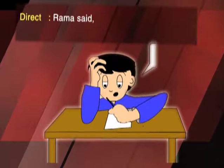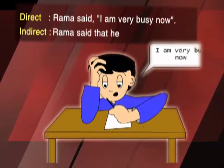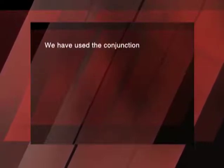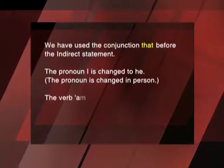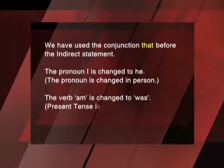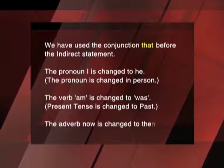Direct: Rama said, 'I am very busy now.' Indirect: Rama said that he was very busy then. In changing the above direct speech into indirect, certain changes have been made. We have used the conjunction 'that' before the indirect statement. The pronoun 'I' is changed to 'he'. The verb 'am' is changed to 'was' — present tense changed to past. The adverb 'now' is changed to 'then'.